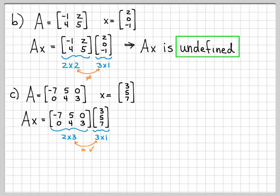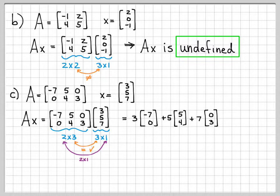The way I do it is just the same. I let each element of X multiply each column of A. So I'm going to get 3 times negative 7, 0, plus 5 times the second column, plus 7 times the third column. I can go ahead and multiply these scalars times vectors. I'll get negative 21, 0. 5 times 5 is 25. 5 times 4 is 20. 7 times 0 is 0. 7 times 3 is 21.